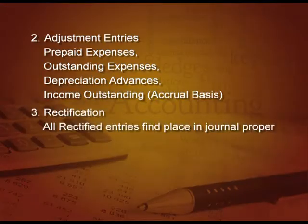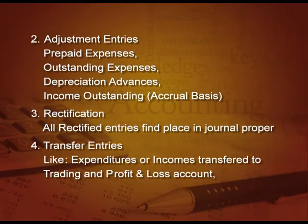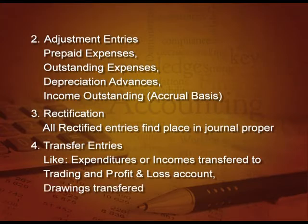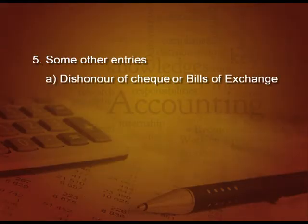Next, rectification entries — all rectification entries find place in journal proper. Whatever corrections we make for previous wrong entries, these will find place in journal proper. Next, transfer entries: expenses and incomes are transferred to trading and profit and loss account, drawings is transferred to capital account. All these transfer entries find a place in this book because there are no specific books for these entries.